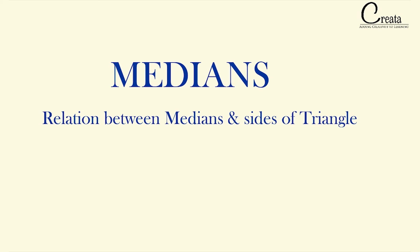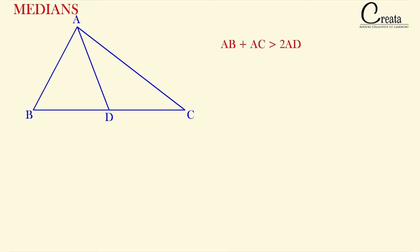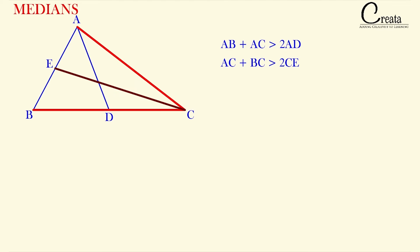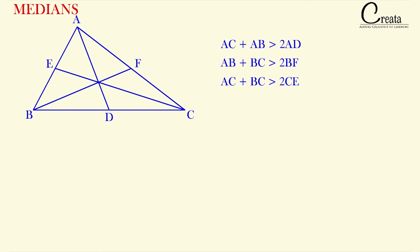Moving further, now we will see the relation between the sides of the triangle and the medians. The first relation is: AB + AC is greater than twice of AD. Here AD is the median and AB and AC are the two sides of the triangle. The addition of two sides is always greater than twice the median which lies between those two sides. Similarly, AC + BC is greater than twice of CE, and AB + BC is greater than twice of BF. This is an important relation.